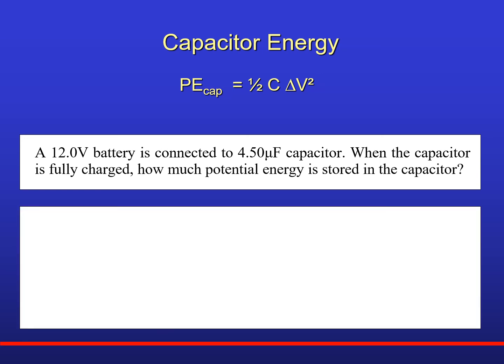Let's work out the math. One half the capacitance, there's the 4.5 times 10 to the minus 6 F Farad, 12 volt squared. You work out that math: 3.24 times 10 to the minus 4 Farad volt squared.